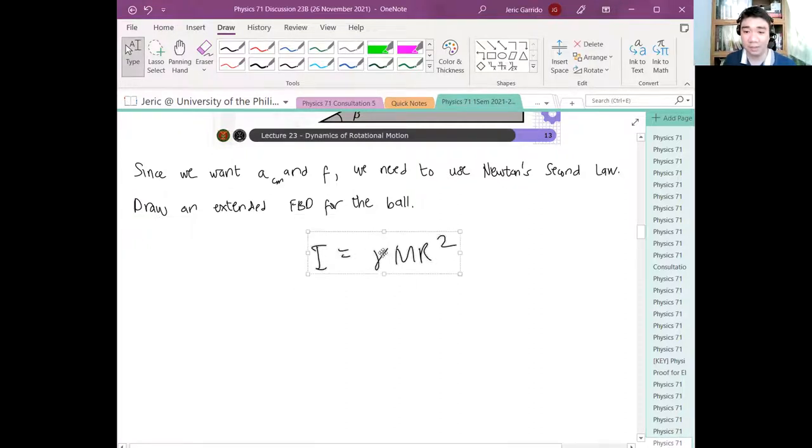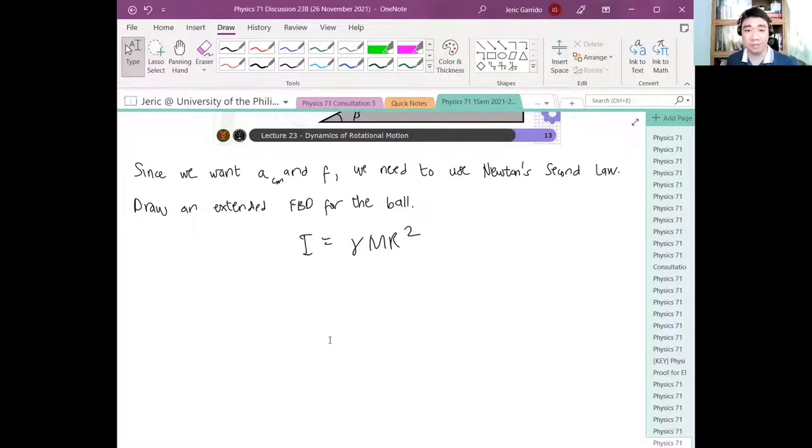Only a few objects satisfy this condition. For example, a cylinder or a sphere satisfy these rolling conditions. Therefore, we will only deal with problems involving uniform sphere, hollow sphere, uniform cylinder, and hollow cylinder. It turns out they always have the form gamma times M times R squared.